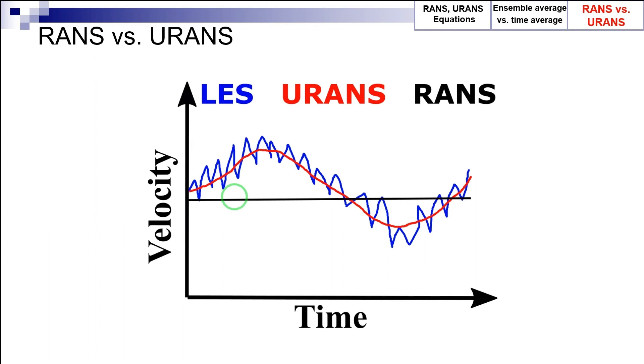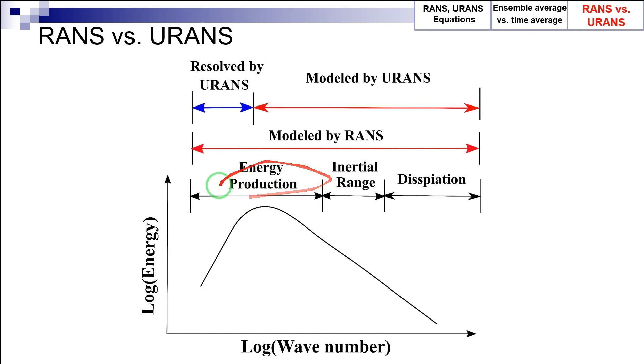The difference between RANS and URANS method can also be explained using the turbulence kinetic energy spectrum as presented here in this figure. URANS resolves the largest scales of a turbulent flow while it models the effect of the rest of the vortices down to the Kolmogorov scale. On the other hand, in the RANS method, the turbulence is accounted for by modeling the effect of all the turbulent scales on the mean flow.